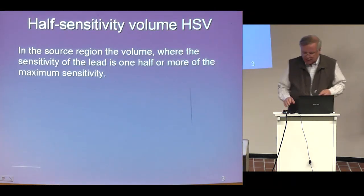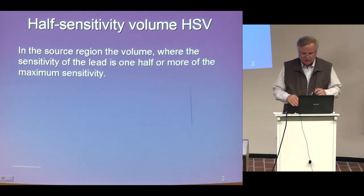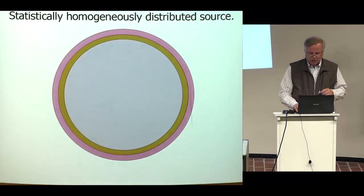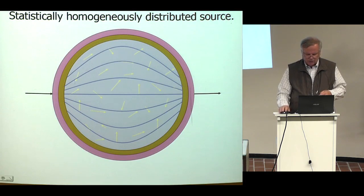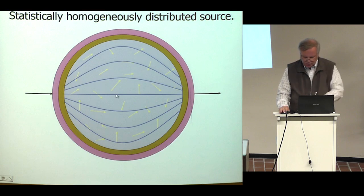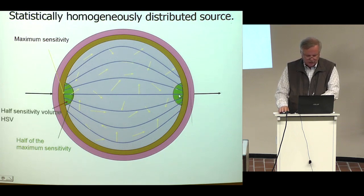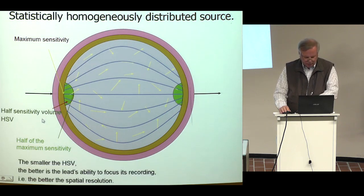So we calculated these spatial resolutions using the half sensitivity volume concept. If there is homogeneous brain activity, the electrodes record from the region of maximum sensitivity, and the half sensitivity volume is the region from which most of the signal comes. The smaller the half sensitivity volume, the better is the spatial resolution.